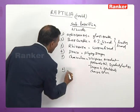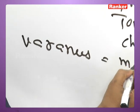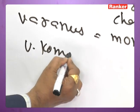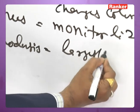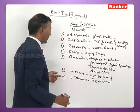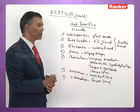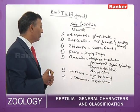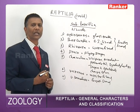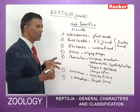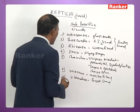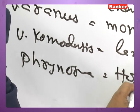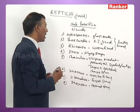Varanus is commonly called Monitor lizard. Varanus komodoensis (Komodo dragon) is the largest lizard, found in Indonesia. Varanus is the only lizard with a forked tongue and is known for its tenacious grip. Phrynosoma lives in deserts and is commonly called horned toad.